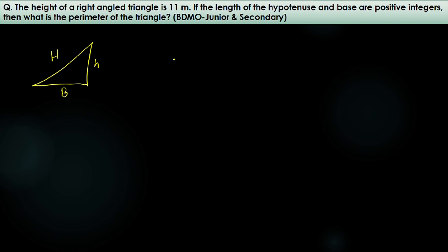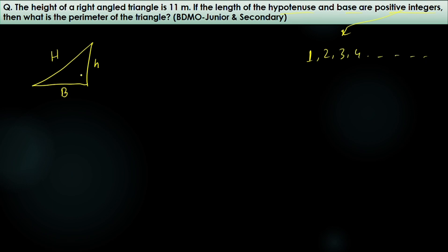The hypotenuse and base are positive integers. Positive integers are numbers greater than zero that are integers — like the natural numbers: 1, 2, 3, 4, 5, 6, 7, 8, ... and so on up to infinity.